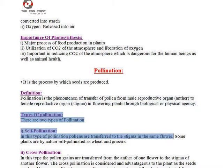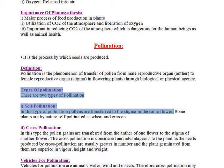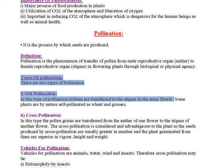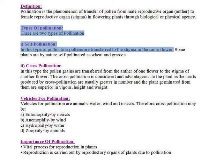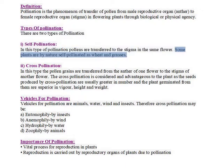Types of pollination: there are two types of pollination. 1. Self-pollination: in this type of pollination, pollens are transferred to the stigma in the same flower. Some plants are by nature self-pollinated, such as wheat and grasses.